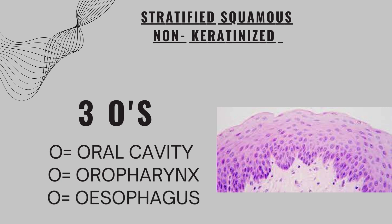For stratified squamous non-keratinized epithelium, the examples are totally different. There are three examples beginning with O: oral cavity, anus, and esophagus. You can remember these as three O-starting examples for non-keratinized epithelium.